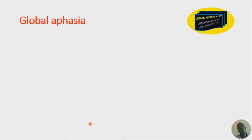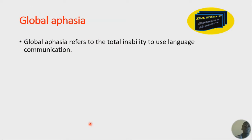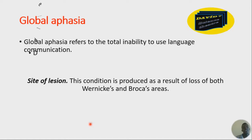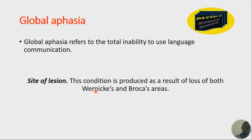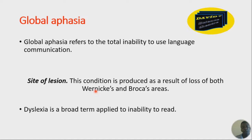Let's talk about global aphasia. This is the third form depending on the site of lesion. In global aphasia, what we have is total inability to use language for communication. This condition is produced as a result of loss of both Wernicke's and Broca's areas — both areas 44 and 22 are damaged or lost. So you cannot use language as a form of communication.